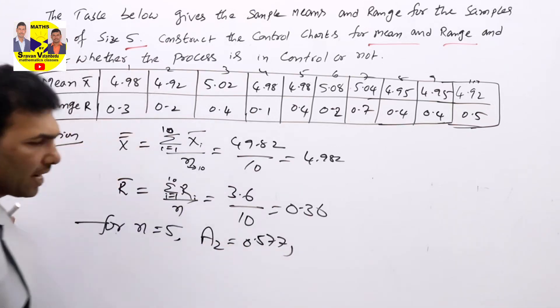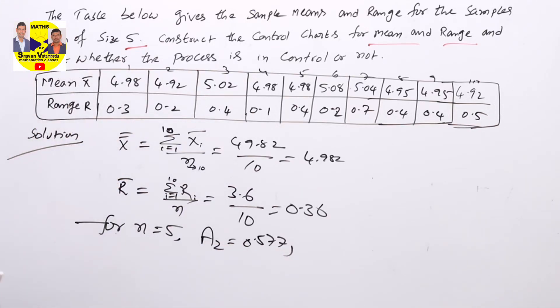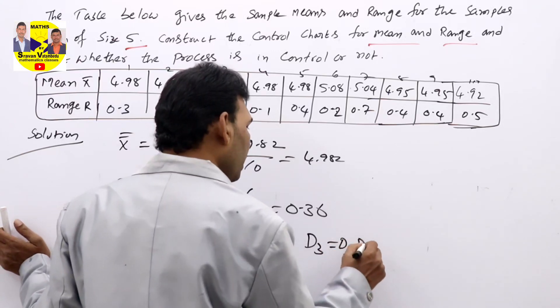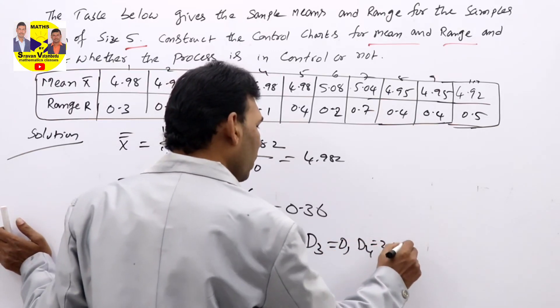In that table, we are getting these values: A2 value. Next, D3 is 0, D4 is 2.115 from the table.